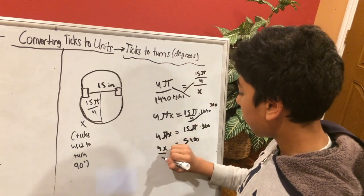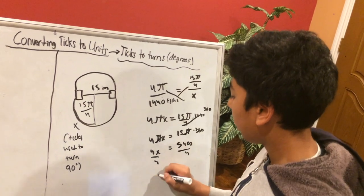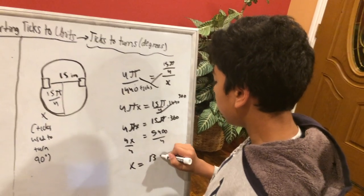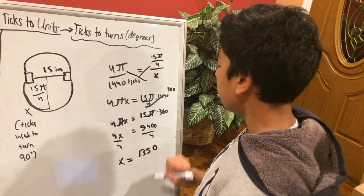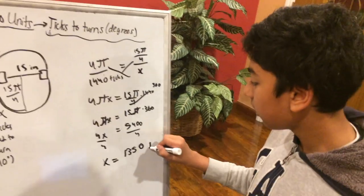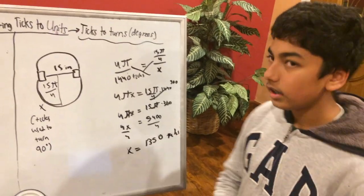And then now, to isolate x, divide by 4, you get x is equal to 1350 ticks per 90 degrees.